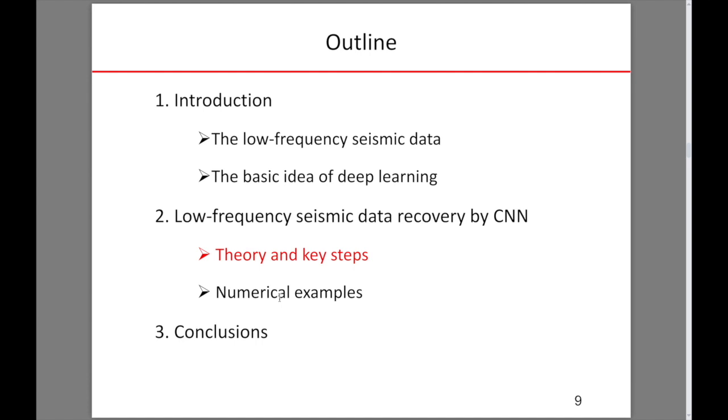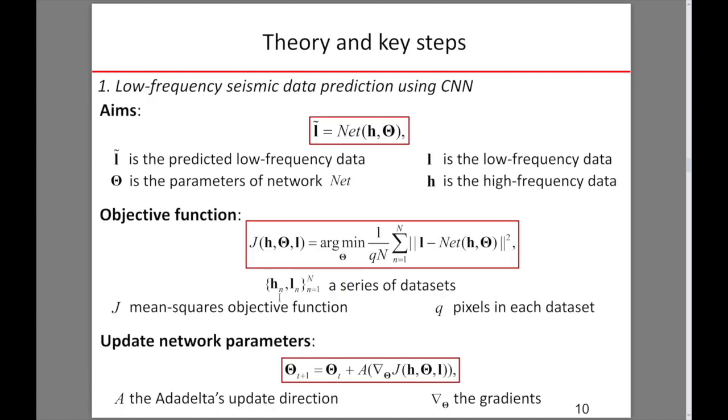The following part is theory and key steps. The basic concept of this method is building a mapping from high to low frequency seismic data, which can be expressed as L equals f of H and theta, where L stands for the low-frequency data, H denotes the high-frequency data, and theta is the parameter of the network. Here is the CNN training. We aim to build a relationship between high and low-frequency data by solving the following least squares optimization problem. We update the parameters of the network by using the gradient descent method.